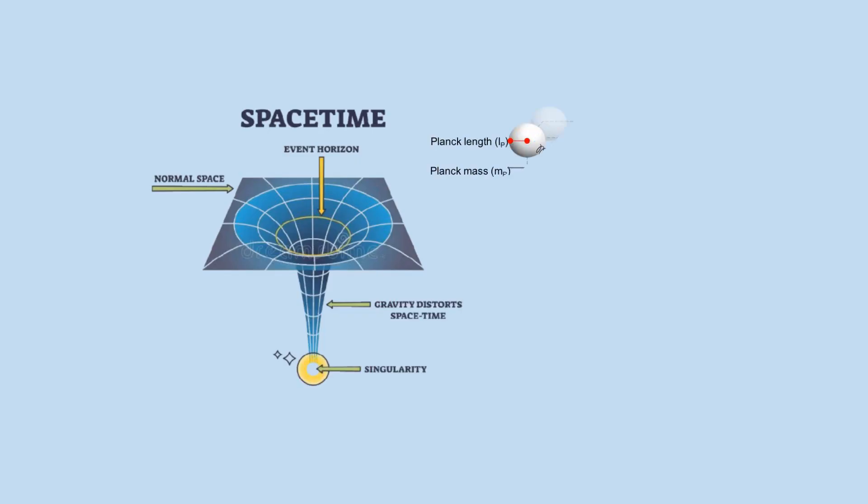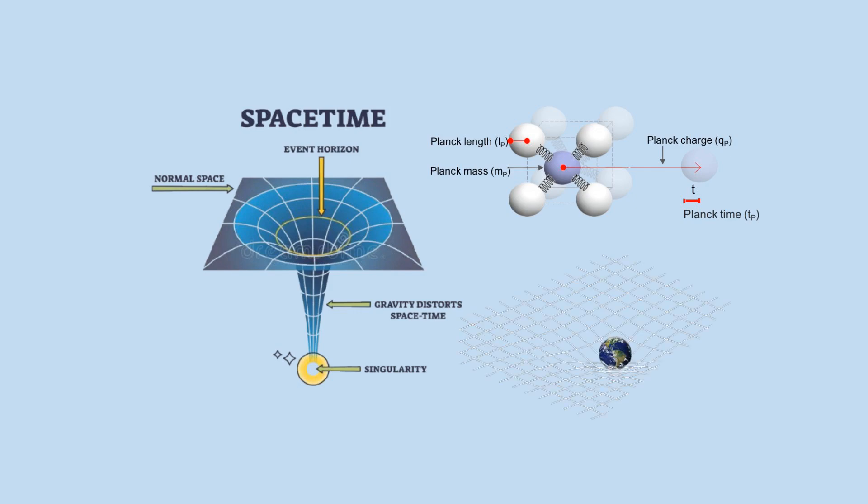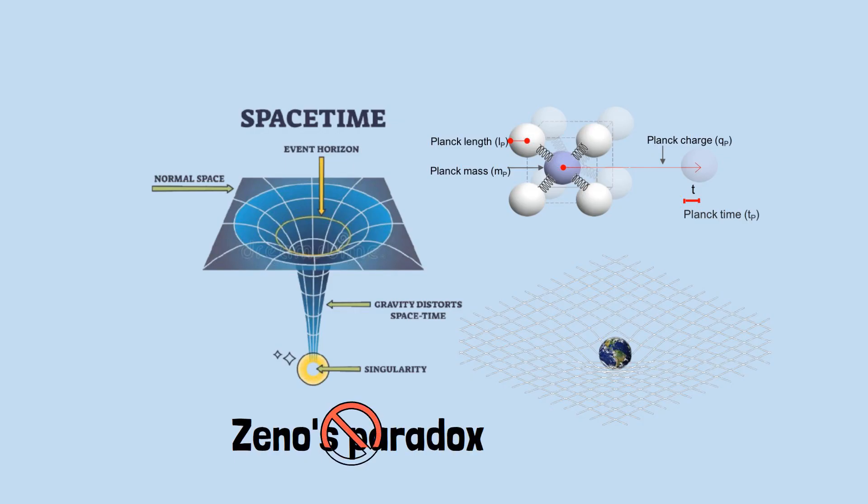There might be fundamental units like the Planck length and Planck time below which our usual concepts of space and time break down. If this is true, then Zeno's paradox might not apply to the real world after all.